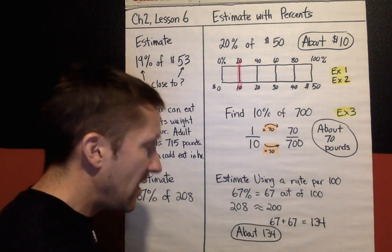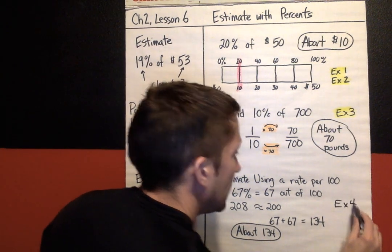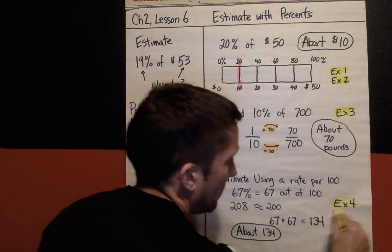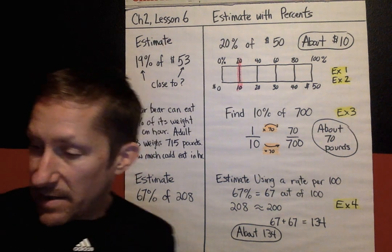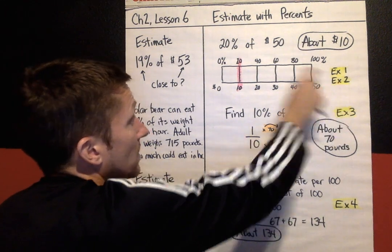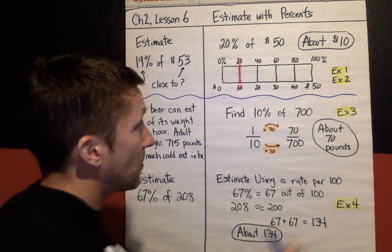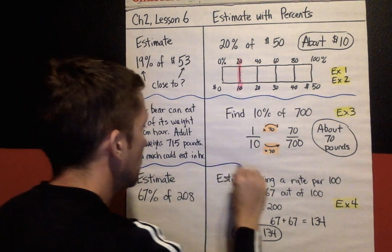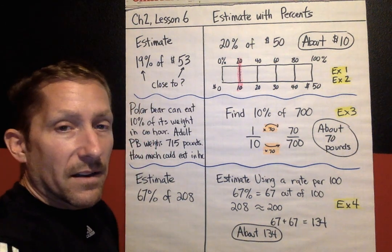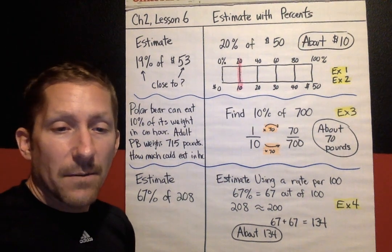In your work today, when you see Example 4 next to a question, try this strategy — estimate using a rate per 100. To recap: if you see Example 1 or 2, use a double bar diagram. If you see Example 3, try an equivalent ratio. If you see Example 4, estimate using a rate per 100. That's all for Lesson 6; I will see you next time.